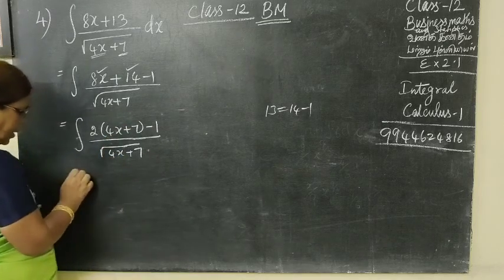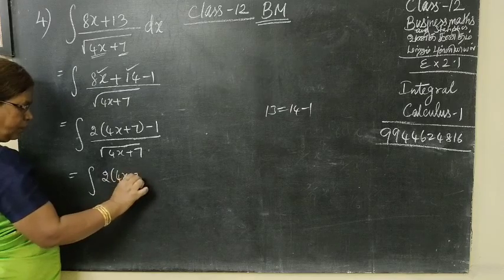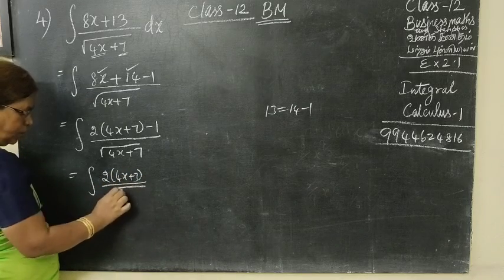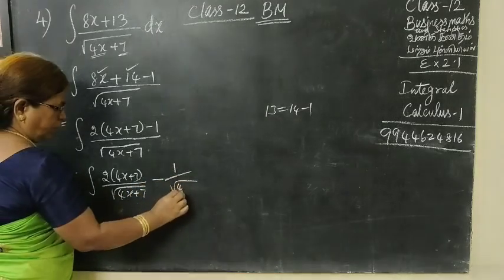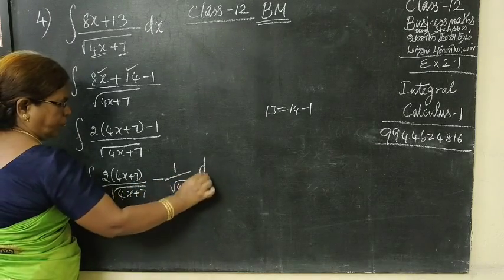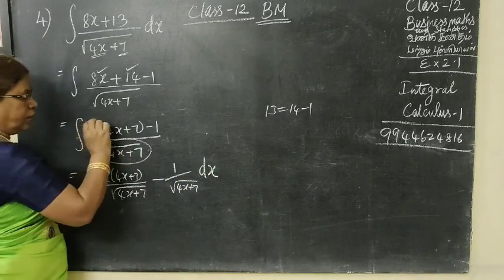Now divide each term separately. Integral 2 times 4x plus 7 by root of 4x plus 7, then minus 1 by root of 4x plus 7 dx.